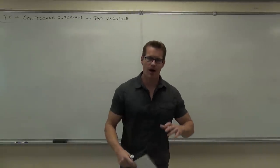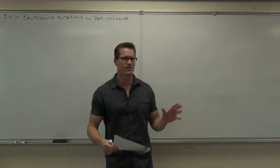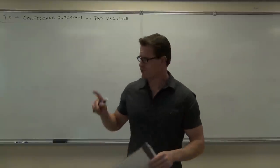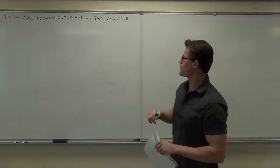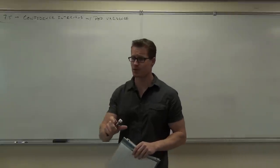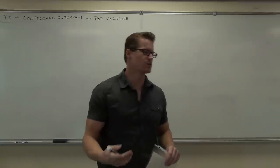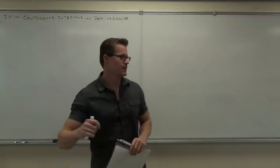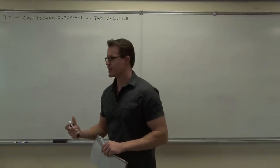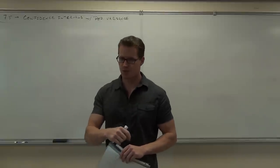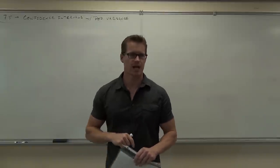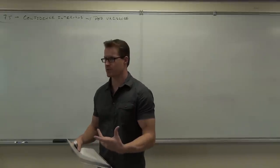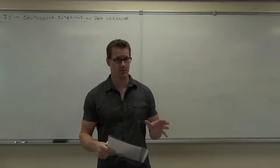The last thing we've got to do is talk about how we can estimate our population variance and standard deviation. If we're going to estimate or use a confidence interval for population variance, it's going to be very similar method-wise to doing any other confidence interval. The only difference is we're going to have a different critical value — something based on a chi-square distribution, which is on your table. Other than that, it's the same idea. You just need to know how to use the table.